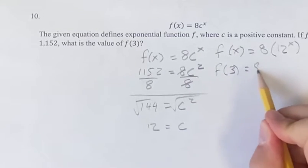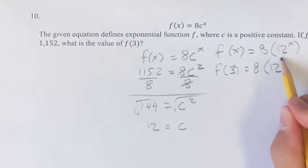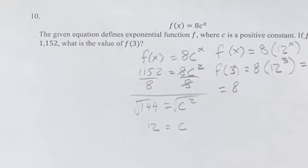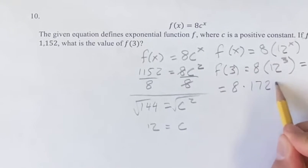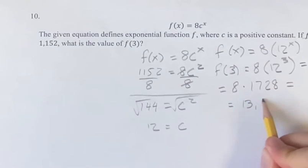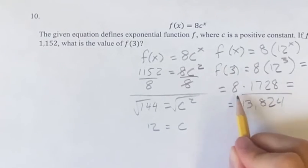So f(3) is going to be 8 times 12 to the 3, plugging in 3 for x. So just doing this out with your calculator, it's going to be 8 times 12 cubed, which is 1728. And 8 times 1728 is going to be 13,824, which is going to be our final answer.